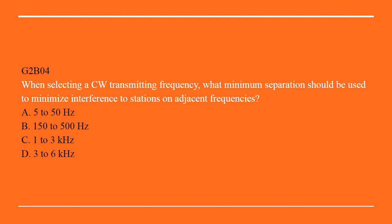G2B04: When selecting a CW transmitting frequency, what minimum separation should be used to minimize interference to stations on adjacent frequencies? A. 5 to 50 Hz. B. 150 to 500 Hz. C. 1 to 3 kHz. Or D. 3 to 6 kHz. Correct answer here is B: 150 to 500 Hz.